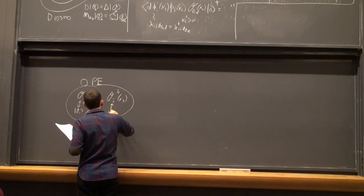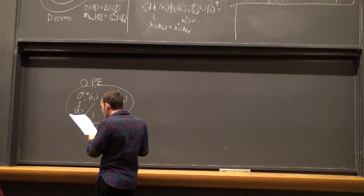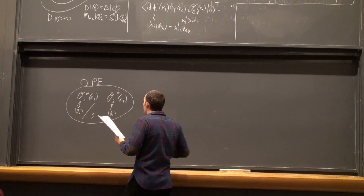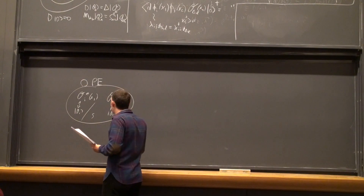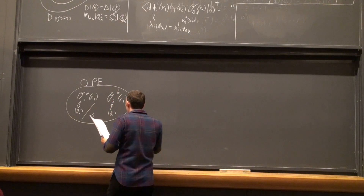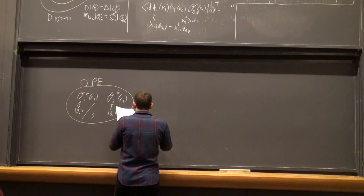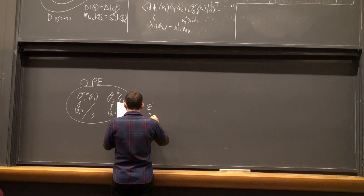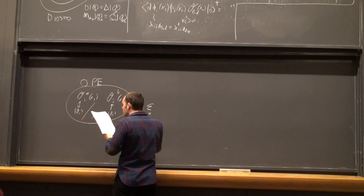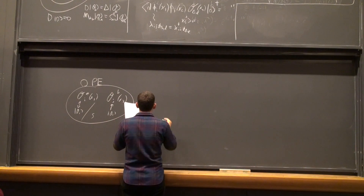Because every operator corresponds to a state, we now have these two states within this sphere. It is a statement that if you have a Hilbert space, you can write the product of any two states as a finite sum of other states. So this is just a mathematical statement. That means if we have the product of two of these operators, i.e., two of these states, we should be able to rewrite this as a finite sum of other states in the theory, i.e., other operators in the theory.